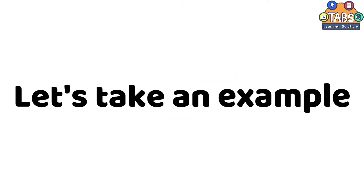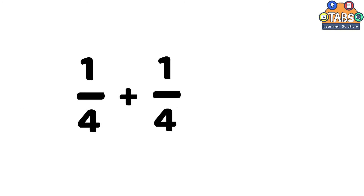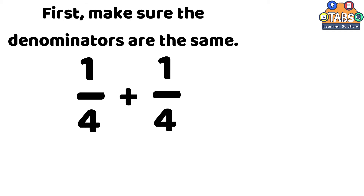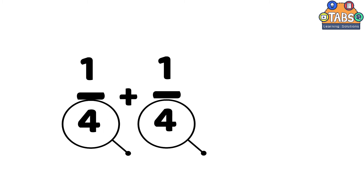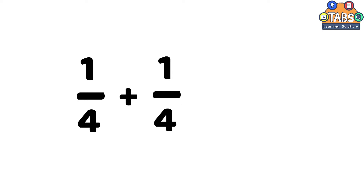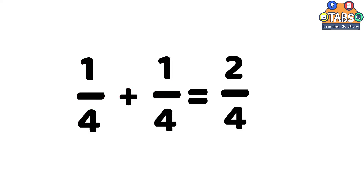Let's take an example: 1 fourth plus 1 fourth. First, make sure that the denominators are the same so we can add the fractions. Since both denominators are the same, we can add the numerators and copy the denominator. So, 1 fourth plus 1 fourth is equal to 2 fourths.